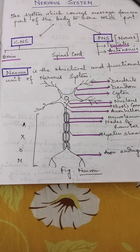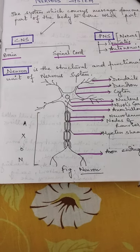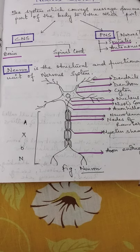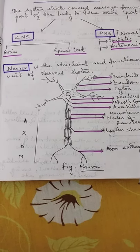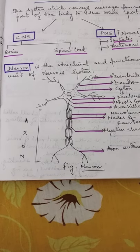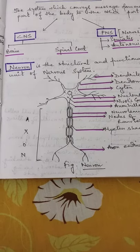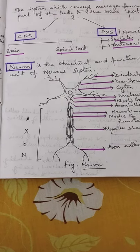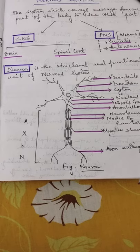The peripheral nervous system can again be divided into somatic and autonomic nervous system. We will come to that afterwards. Now, neuron or the nerve cell - the figure which you can see here is the structural and functional unit of the nervous system.